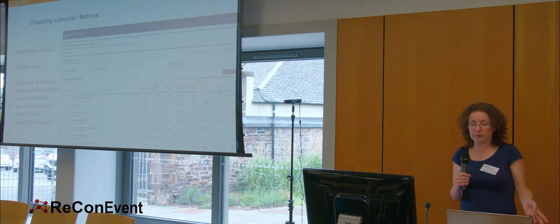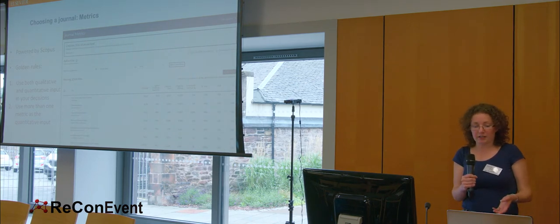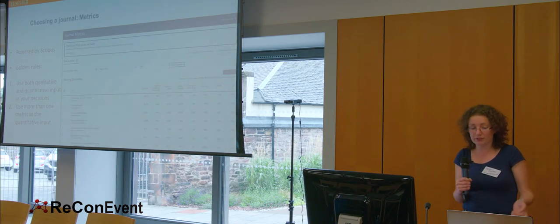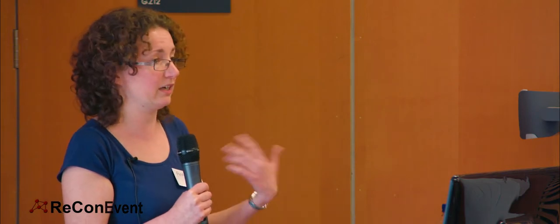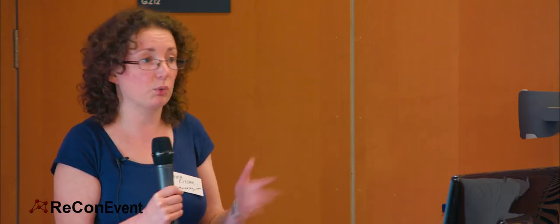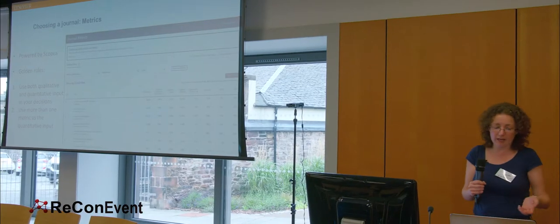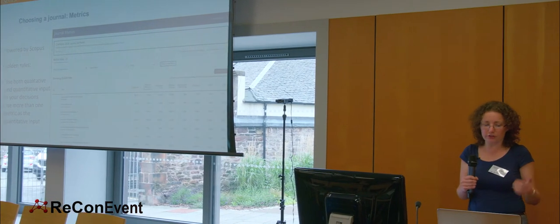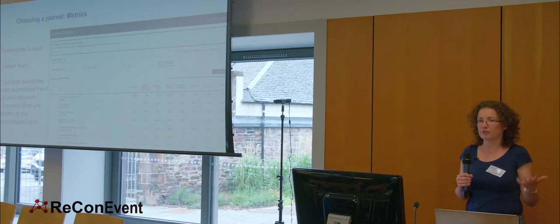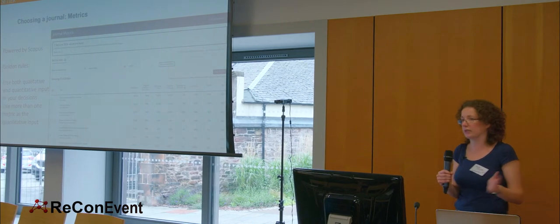The golden rules when using metrics: they're not enough on their own. Use both qualitative and quantitative input in your decisions. You're not going to choose a journal based on one or even several metrics on its own. Talk to the people in your field, talk to your supervisor, talk to the experts and get their take on what journals are out there and where might be the best venue for your work. And if you are using metrics, use more than one. One metric will never be the full story about a journal.